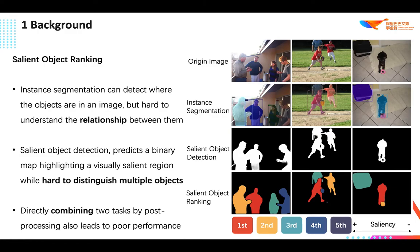Instance segmentation can detect where the objects are in an image, but it is hard to understand the relationship between them. We pay attention to a typical relationship: relative saliency. A closely related task, salient object detection, predicts a binary map highlighting a visually salient region, while it is hard to distinguish multiple objects. Directly combining two tasks by post-processing also leads to poor performance. There is a lack of research on relative saliency at present, limiting practical applications such as content-aware image cropping, video summary, and image labeling.